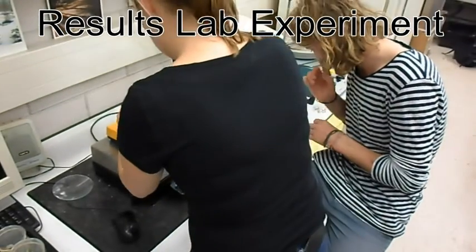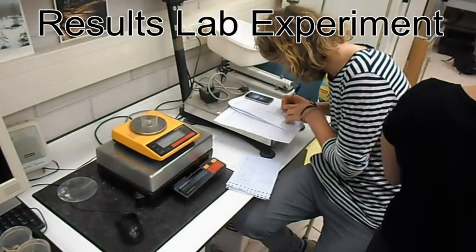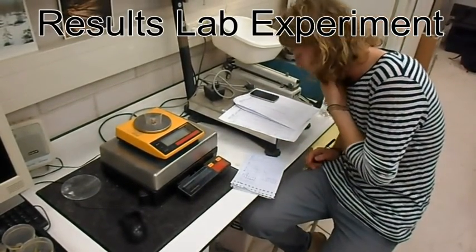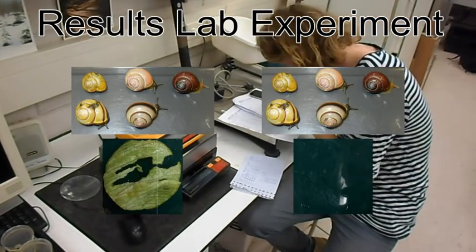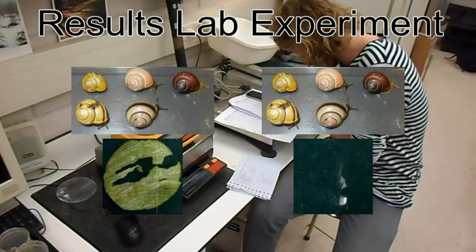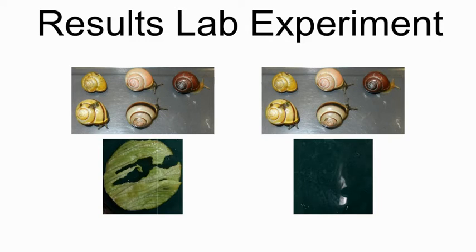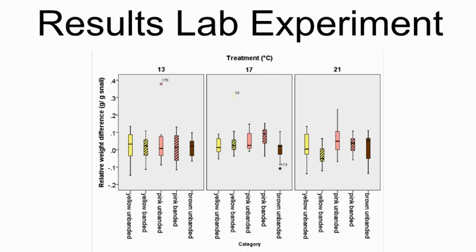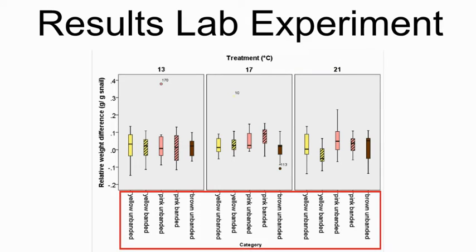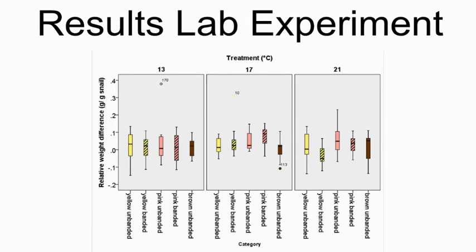In addition to feeding activity, we tested for relative weight gain or loss. On average, all snails from the experiment lost weight. We used a paired t-test to test for these differences. As expected, the control snails lost more weight than the snails from the experiment who received a leaf disk of lettuce for four days. Unexpectedly, the snails which received lettuce also lost weight. Relative weight loss was significant for both the experiment group and the control group, with a p-value smaller than 0.001. We also tested for differences in relative weight changes between treatments using an ANOVA, but found no significant differences for temperature treatment, phenotypic category, or their combination.